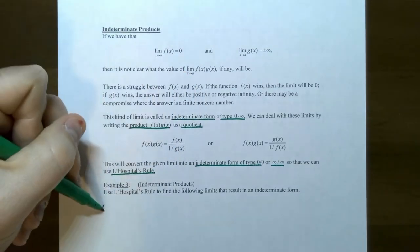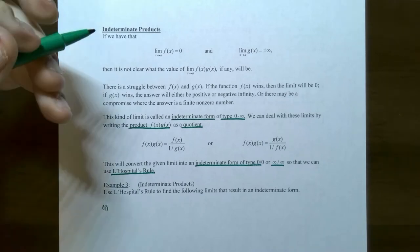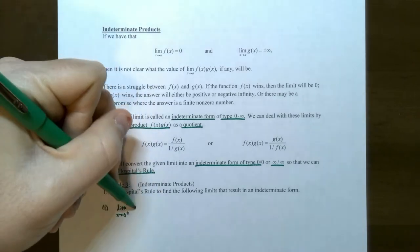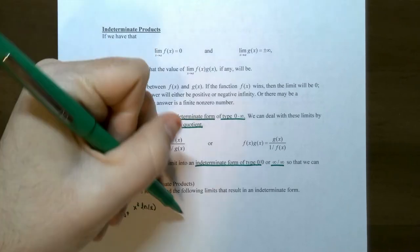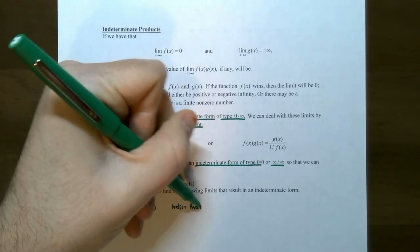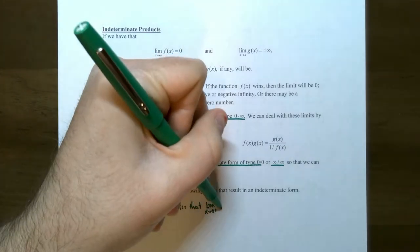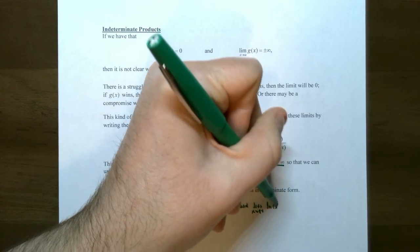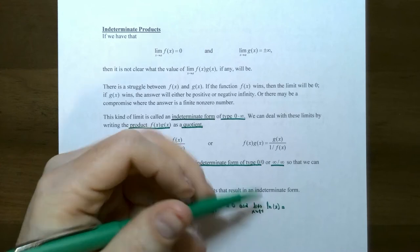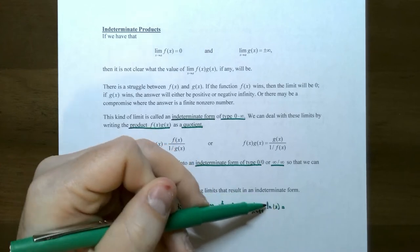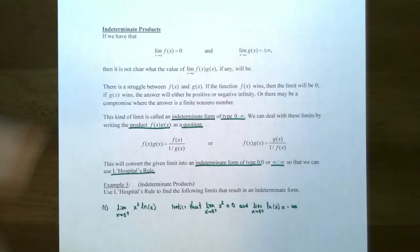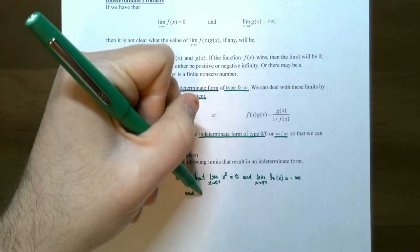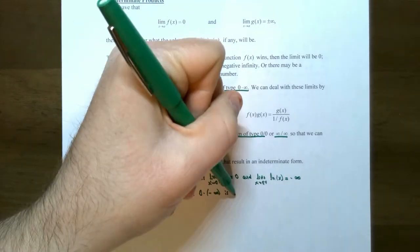Example three: use L'Hôpital's rule to find the following limits that result in an indeterminate form. Let's look at the limit as x approaches 0 from the right of x squared times natural log of x. The limit of x squared as x approaches 0 from the right is 0, and the limit of natural log of x as x approaches 0 from the right is negative infinity. So this produces 0 times negative infinity, which is an indeterminate product.